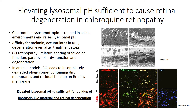Chloroquine has an affinity for melanin and tends to accumulate in RPE cells even after treatment has stopped. We see a parallel defect in degeneration in chloroquine retinopathy — a relative sparing of foveal function, parafoveal dysfunction and degeneration. In animal models, chloroquine can lead to incompletely degraded phagosomes with disc membranes and residual buildup in Bruch's membrane. Mice treated with chloroquine show photoreceptor dysfunction and substantial accumulations of undegraded material in the RPE cells.